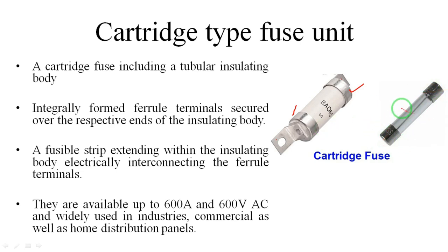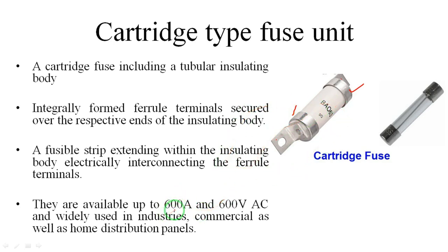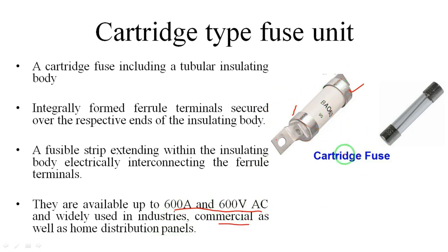These fuses are very useful to protect devices from damage. If the fuse does not blow, the overcurrent will flow to the device and the device will burn or be permanently damaged. These fuses are available up to 600 amperes and 600 volts AC, and are used in industries and commercial purposes. Compared to the kitkat type fuse, cartridge fuses are used in many more devices and industries.